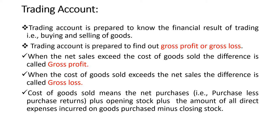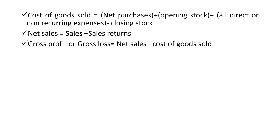When the cost of goods sold exceeds net sales, the difference is called gross loss. Gross loss equals cost of goods sold minus net sales. Cost of goods sold equals net purchases — that is purchases minus purchase returns — plus opening stock, plus all direct expenses incurred on goods purchased, minus closing stock, which is the unsold stock at the end of the accounting period. Net sales equals sales minus return inwards, that is all sales returns.